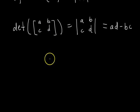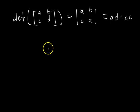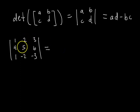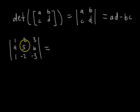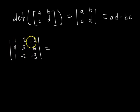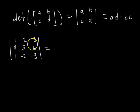Cofactor expansion is one method to compute the determinant of a matrix. Let me write down an example matrix. We want to find the determinant of this 3x3 matrix using cofactor expansion. To do this, we pick any row or any column to cofactor expand along. This matrix has no zeros anywhere, so it's not advantageous to pick any particular row or column. So let's just pick the first row to cofactor expand along.